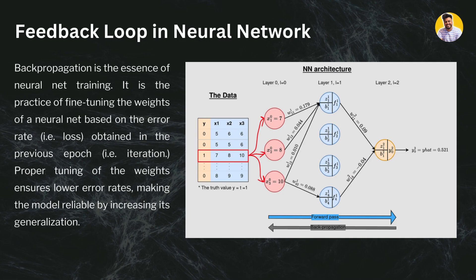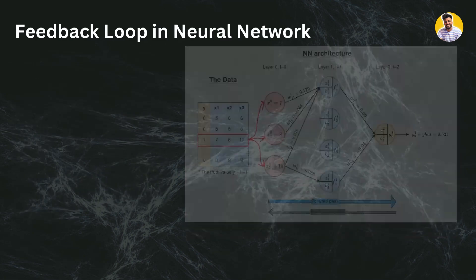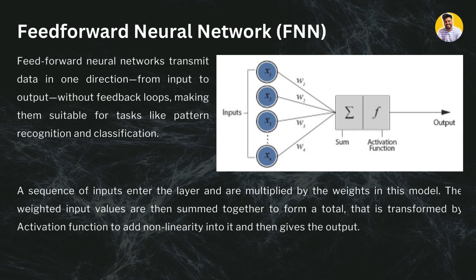The feedback loop means the network sees its output, compares it with the expected result, and transfers back the error — the mean squared error or marginal error — to the neural network so it can adjust its weights and run the loop again. That loop is not present in feed forward neural networks; it is present in backpropagation neural networks.